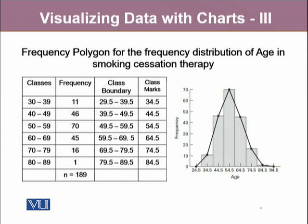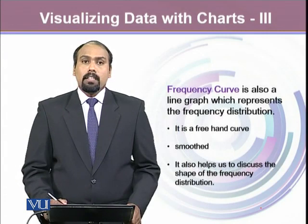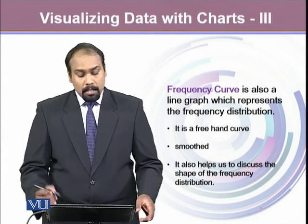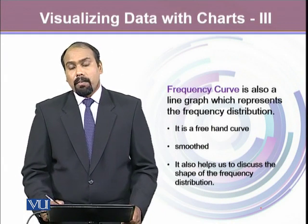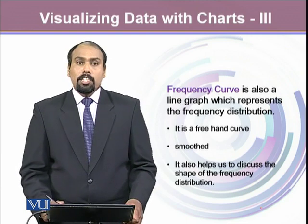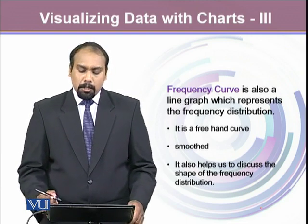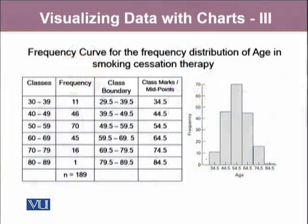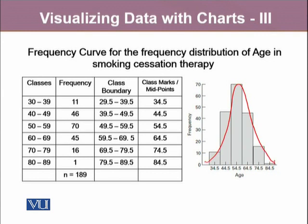We can overlay the frequency polygon onto the histogram by connecting all the dots at the midpoints of the bars, and it shows a similar picture. A frequency curve is a third type of graph used to represent the shape of our frequency distribution. It is also a line chart, but it is a smooth freehand curve, and it also helps us to discuss the shape of the frequency distribution. For our data, we can overlay the frequency curve over the histogram — this smooth freehand line is called a frequency curve.